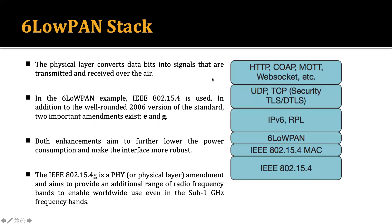This is the layer stack in 6LoWPAN. The physical layer and MAC layer are the same as 802.15.4. Above that is the 6LoWPAN adaptation layer, which provides adaptation to the network layer. In the network layer, IPv6 and RPL — Routing Protocol for Low Power and Lossy Networks — are used. The transport layer uses UDP or TCP, with security via TLS or DTLS. The application layer supports HTTP, CoAP, MQTT, WebSocket, and similar protocols.